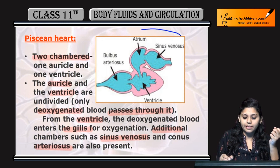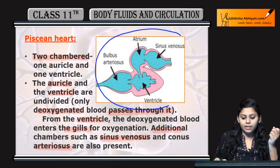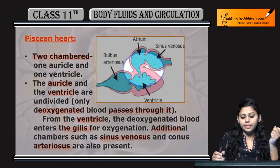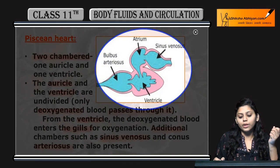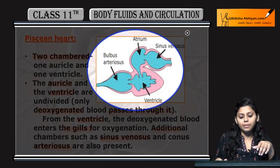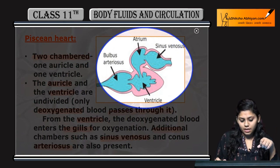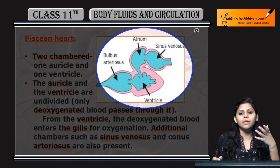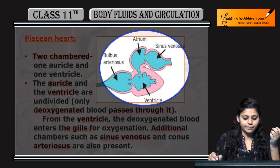Let's see in the diagram. Ventricle is present, auricle is present — one ventricle and one atrium. Bulbus arteriosus and sinus venosus are extra chambers present in the fish heart.